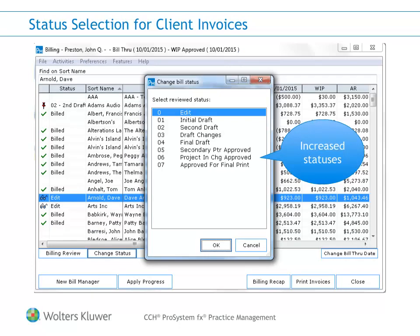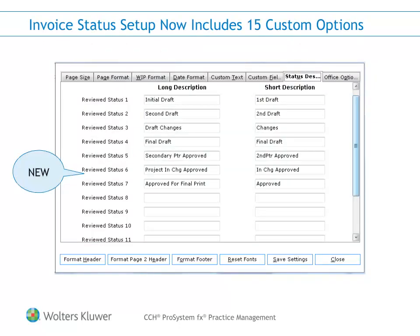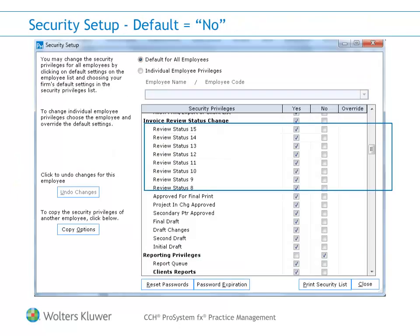Ten new customizable invoice statuses have been added for better tracking of your billing process. Customize your invoice statuses in the Firm Setup area on the Status Description tab. Enter the Long Description and Short Description for the statuses you wish to add. Give your users the rights to use the statuses by adding the Invoice Review Status Change privilege for the appropriate statuses.